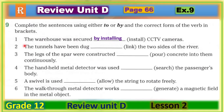Number two: 'The tunnels have been dug ___ link the two sides of the river.' The answer is 'to link.' Number three: 'The legs of the spa were constructed ___ pouring concrete into them continuously.' The answer is 'by pouring.' Number four: 'The handheld metal detector was used ___ search the passenger's body.' The answer is 'to search.'